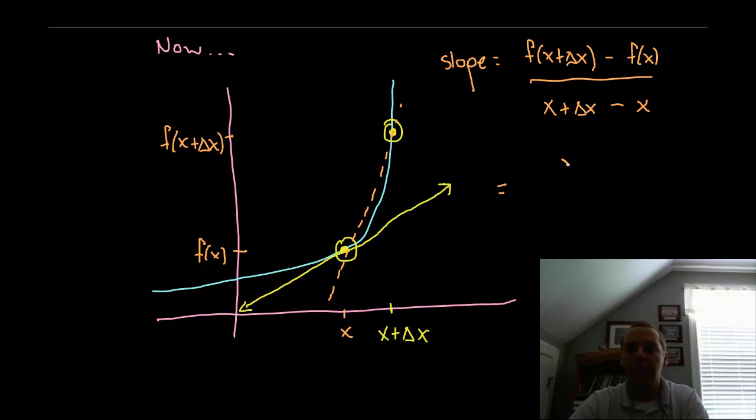Now if I clean that up a little bit, we have f of x plus delta x minus f of x all over just delta x because the x and the minus x cancel. Now if I said that's exactly the slope of the yellow line, that would be incorrect because as you can tell, and I've kind of exaggerated the difference here, but they're not exactly the same. One's tilted slightly higher than the yellow line that I want the exact slope for.